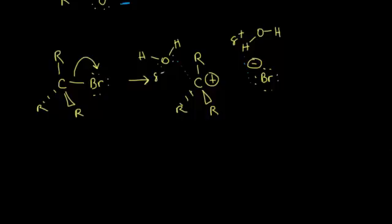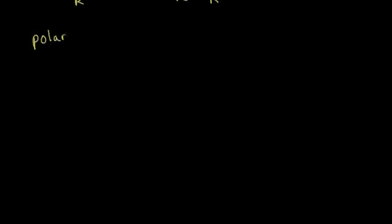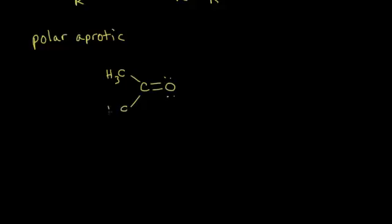Our second group of solvents are called the polar aprotic solvents. A good example of a polar aprotic solvent is acetone. The dot structure for acetone has a carbonyl with two methyl groups attached to the carbon. We know there's some polarity involved because the oxygen is partially negative and the carbon is partially positive. Acetone is considered to be aprotic — the protons present in acetone are attached to carbon, which is not a very electronegative atom.